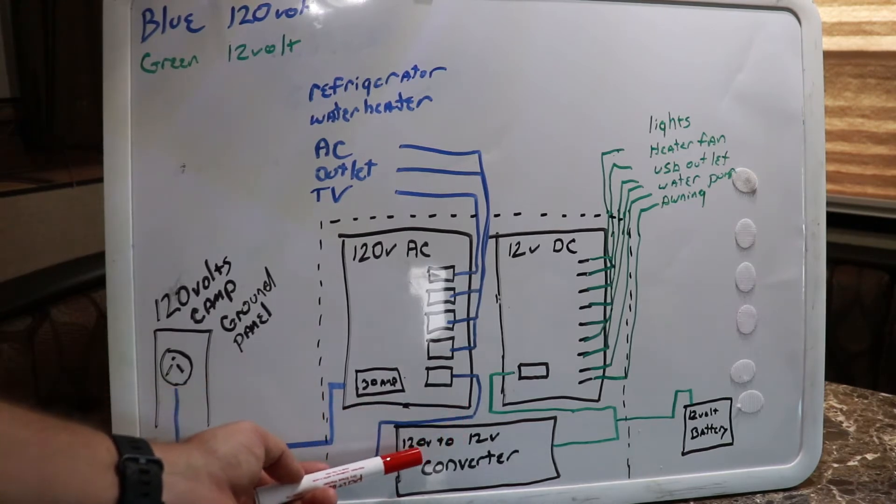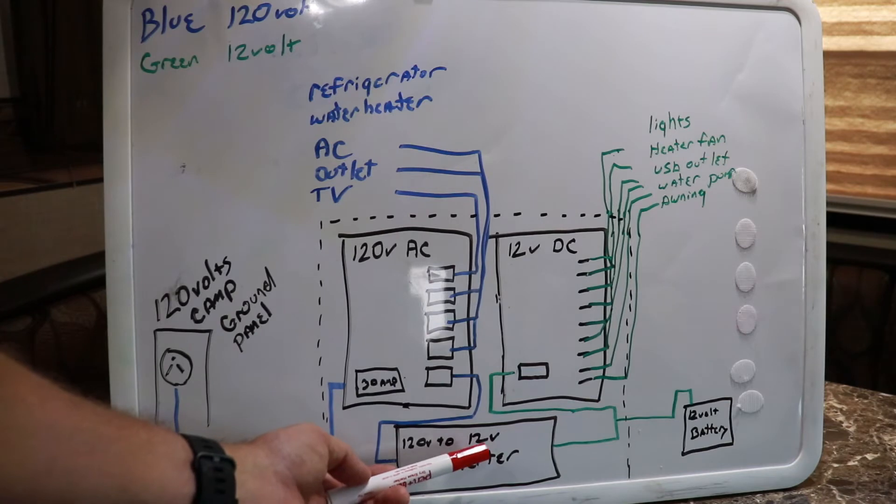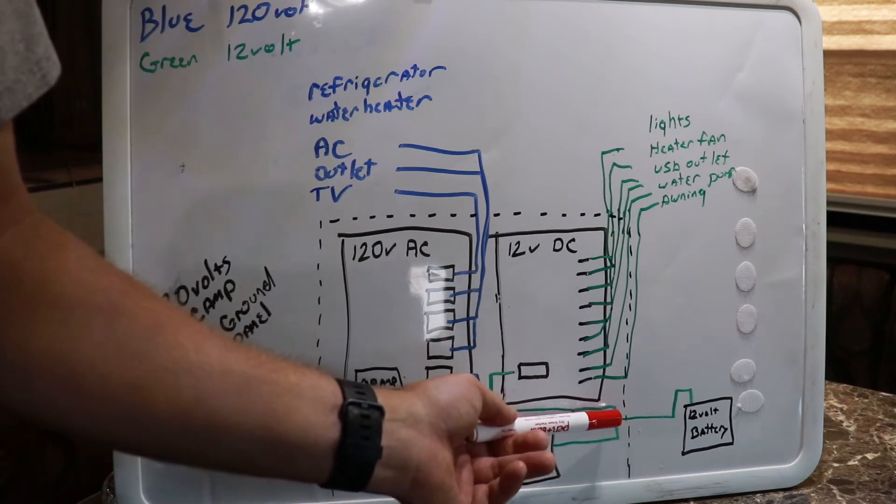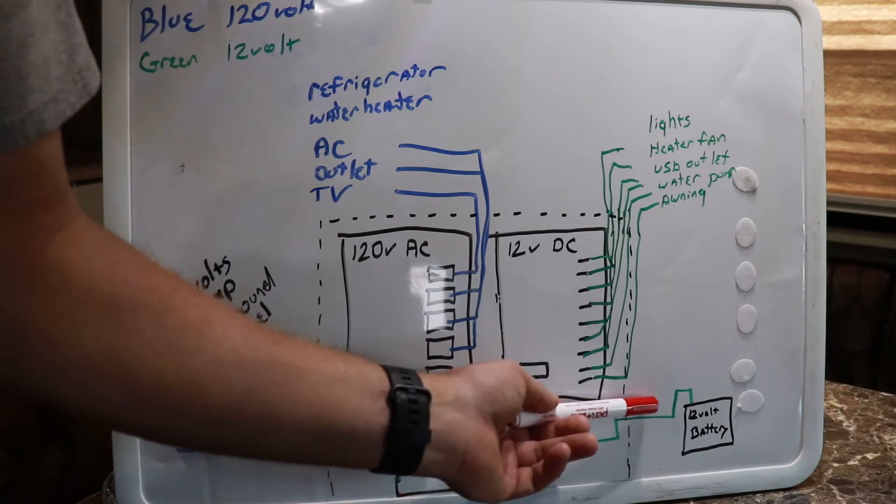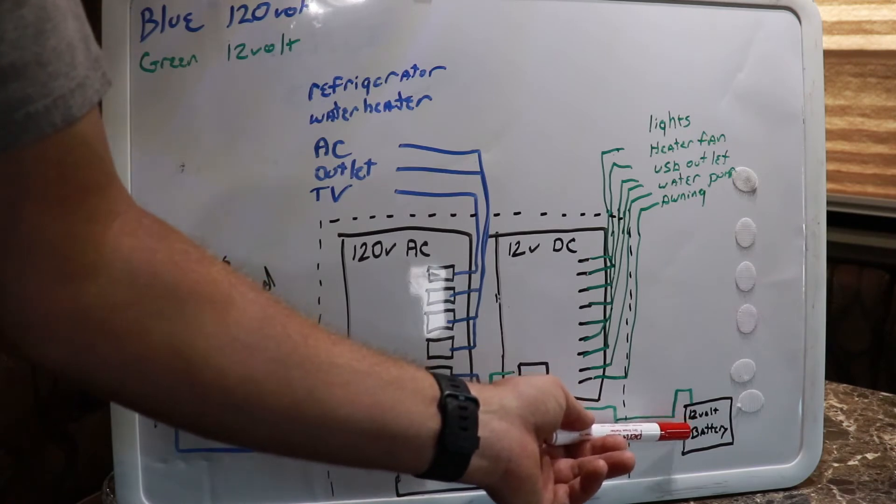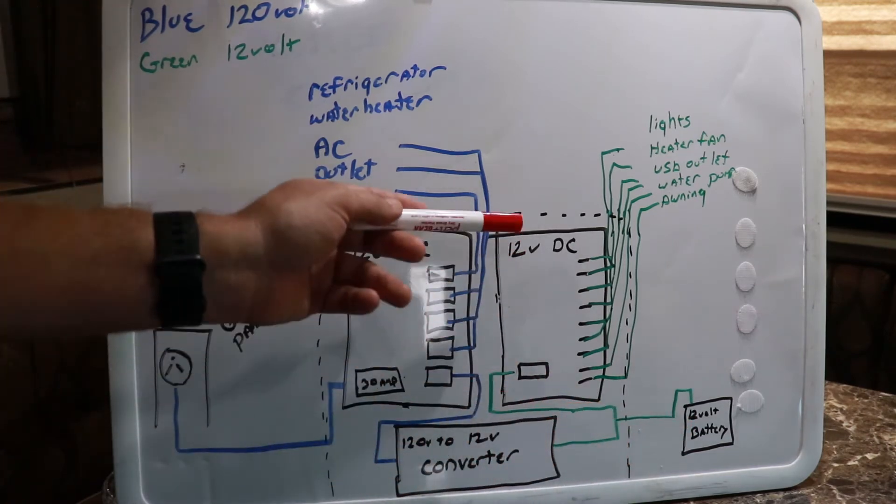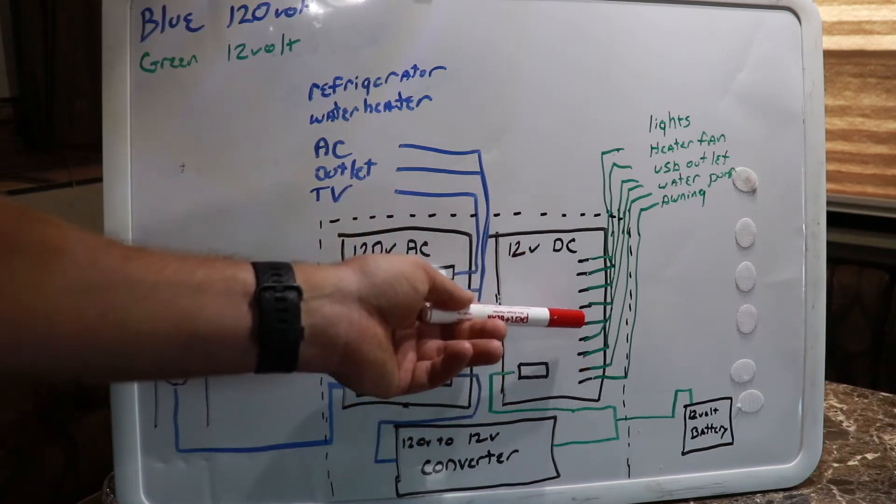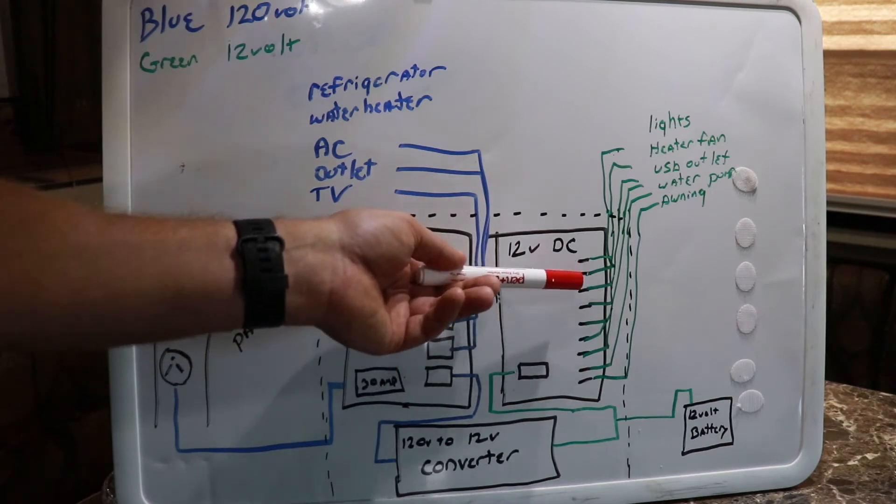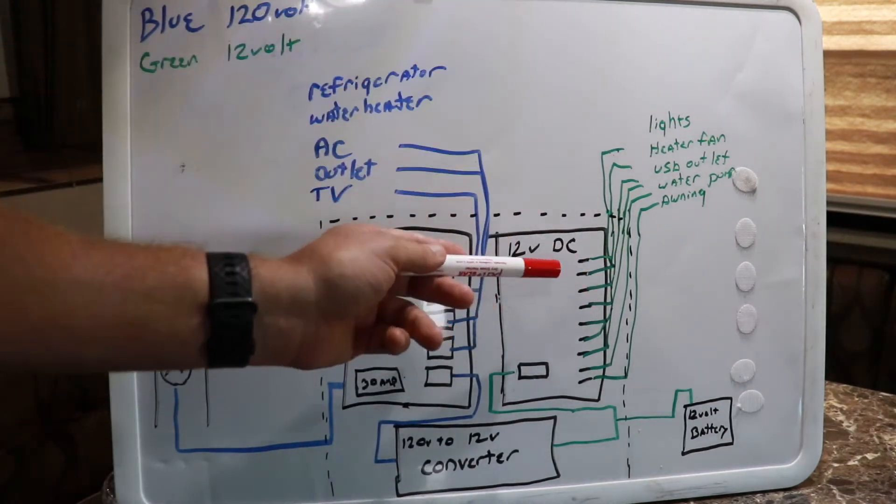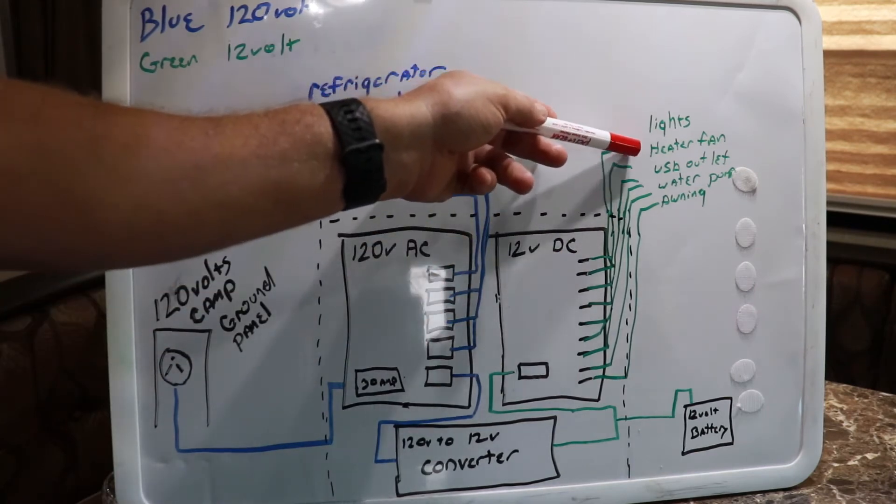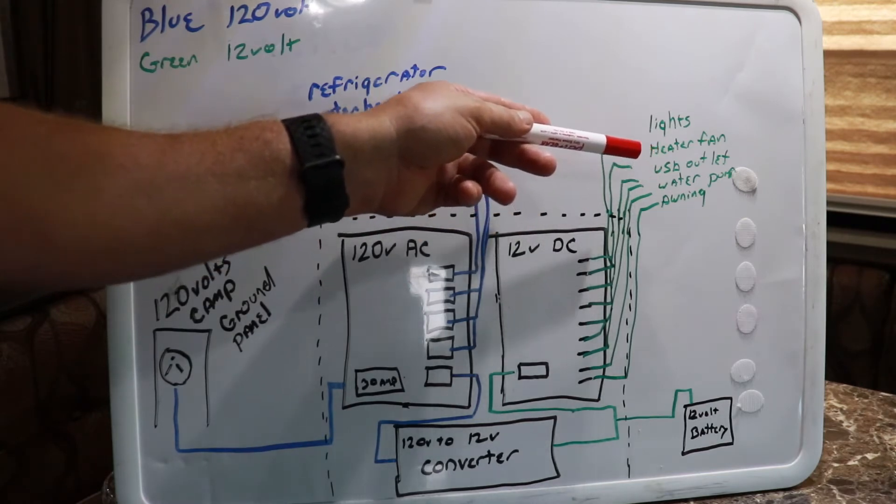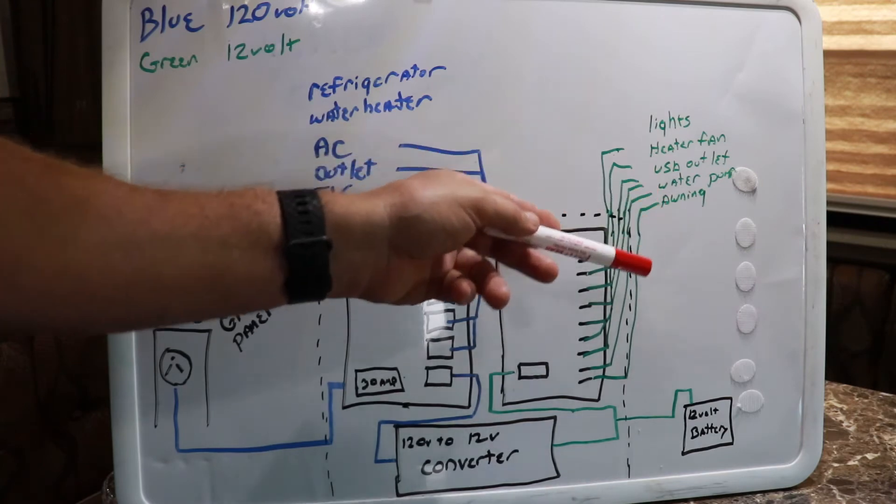As it leaves your converter, it Ys and it does two things. After the Y, the first one it'll charge your 12 volt battery. The other leg of the Y will come up here and run your DC panel. These fuses here will look like car fuses, the little bladed style fuses. And the DC 12 volt will run your lights, your heater fan, any USB port outlets you have, your water pump, any of your sensors, your awnings. That's all ran off of DC.